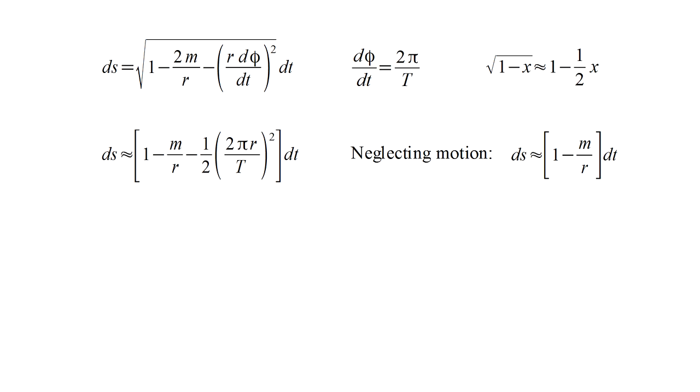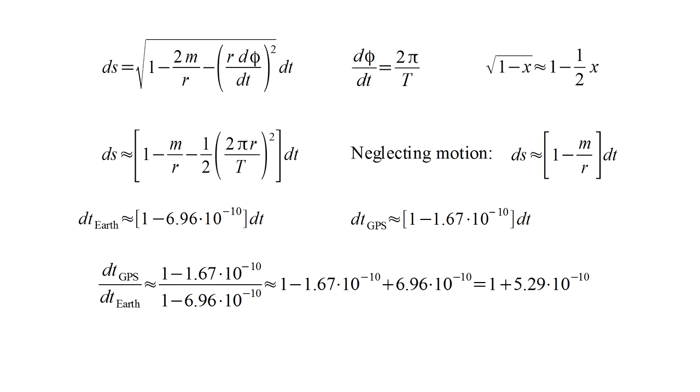To start, we'll consider only gravitational effects, by neglecting the motion term. Imagine a non-rotating Earth with a GPS satellite suspended above it, maybe mounted on a huge tower. For Earth, m over r is 6.96 times 10 to the minus 10. A clock on a non-rotating Earth runs slower than a faraway clock by about 7 parts in 10 billion. At the GPS altitude, m over r is 1.67 times 10 to the minus 10th. The ratio of these tells us how much faster GPS clocks run than clocks on Earth, again neglecting motion. The answer is 5.29 parts in 10 billion. That factor over the course of one day adds up to 45.7 microseconds. That might sound small, but for electronics it's a huge number, equal to roughly 100,000 clock cycles of a typical CPU.